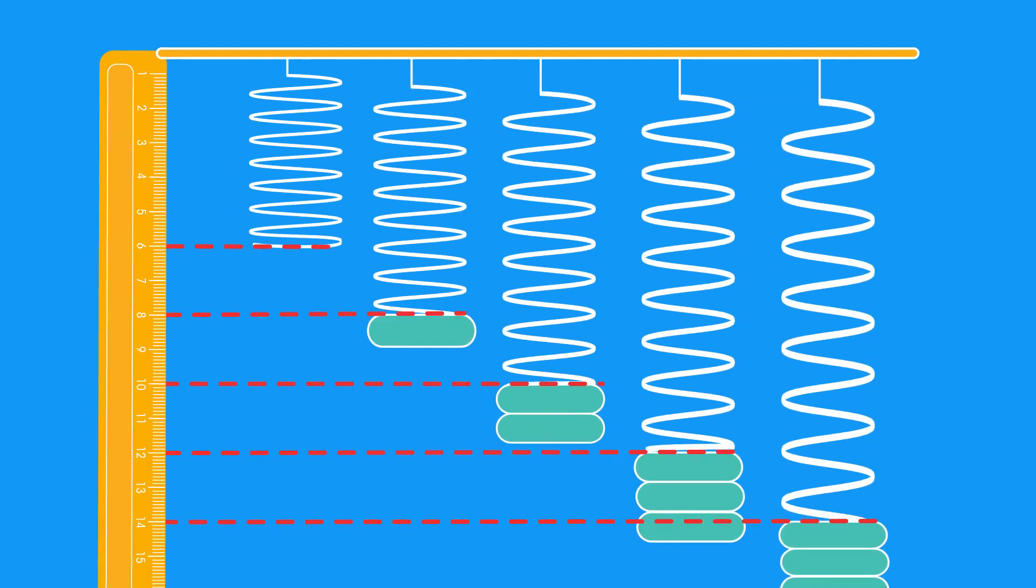The extension of a spring is found by subtracting the original length of the spring from its length with the force applied.